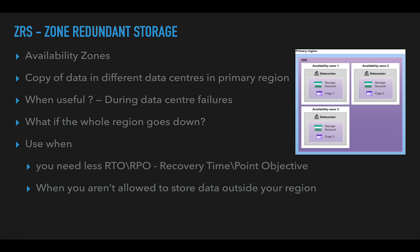When you need less RTO or RPO — meaning you need data back immediately when one data center goes down — you should keep copies in different data centers within the same region. The time to retrieve data from another data center in the same region will be very low. Also, if policies don't allow data outside your region, ZRS is the right choice.